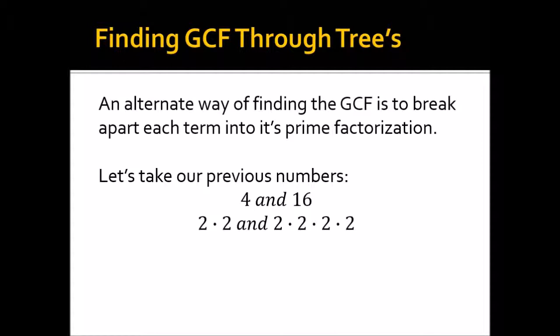So what you do is you look for the greatest number of matching groups here. So for the 4, you see that we have a 2 and a 2. And 16 also has a 2 and a 2. So therefore, your GCF is 2 times 2, which is going to be 4.